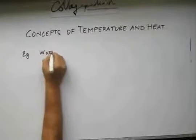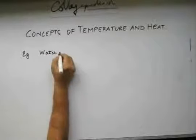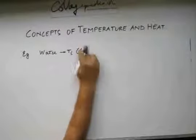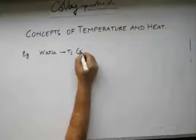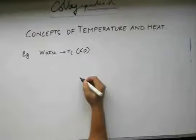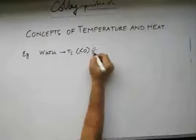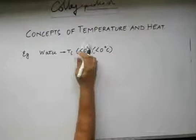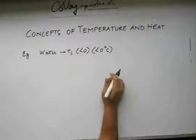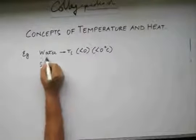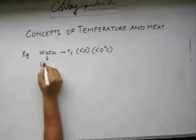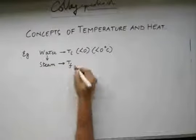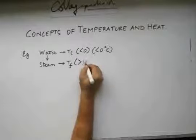Say we have water which is at a temperature Ti. This Ti is negative, which means it is less than 0 degree Celsius — we are looking at the relative scale of Celsius. We need to convert this water to steam at a temperature Tf which is greater than 100 degree Celsius.